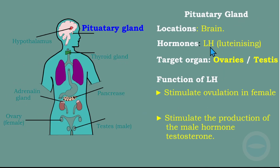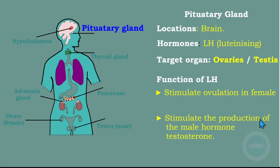The luteinizing hormone (LH) is also secreted by the pituitary gland. The targets are the ovaries and the testes. Its functions: in females, it stimulates ovulation; in males, it stimulates the production of the male hormone testosterone.